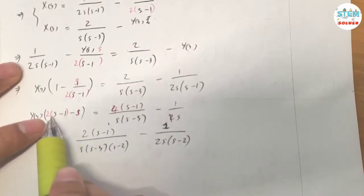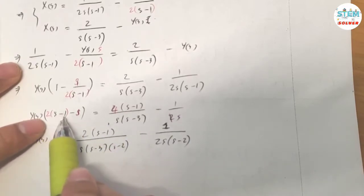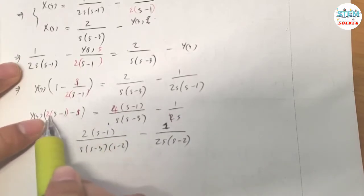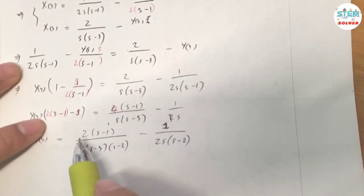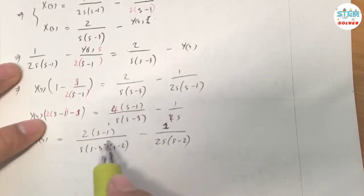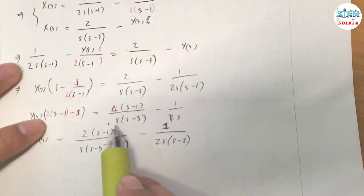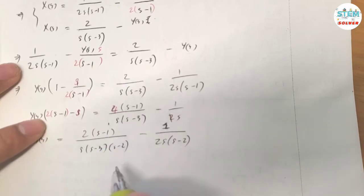Simplify the left side: 2S minus 2 minus S gives S minus 2. On the right side this becomes 4 over S times (S minus 3).